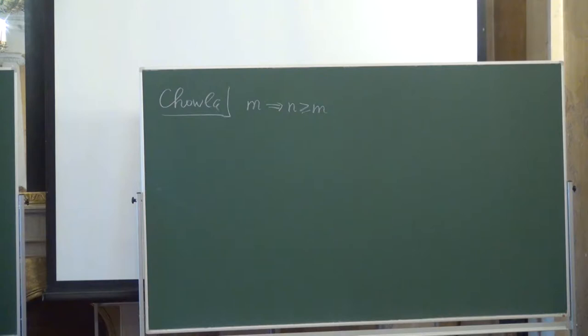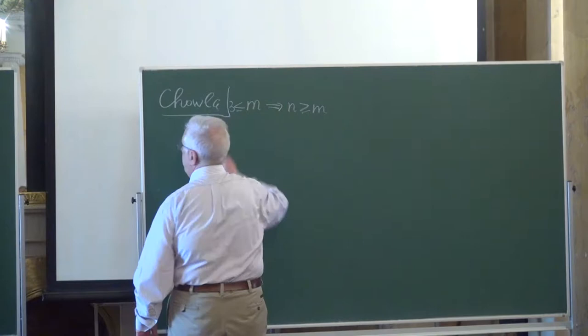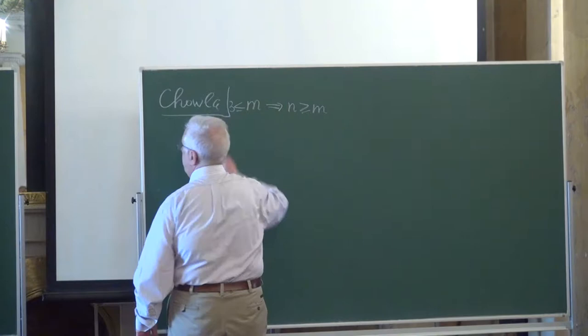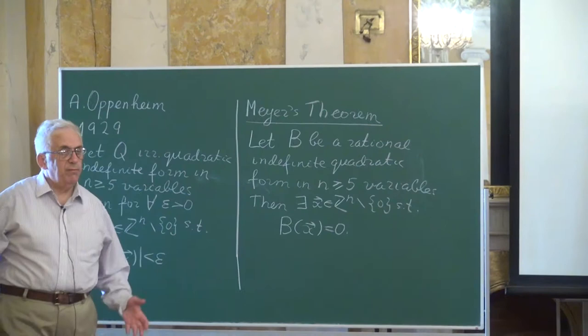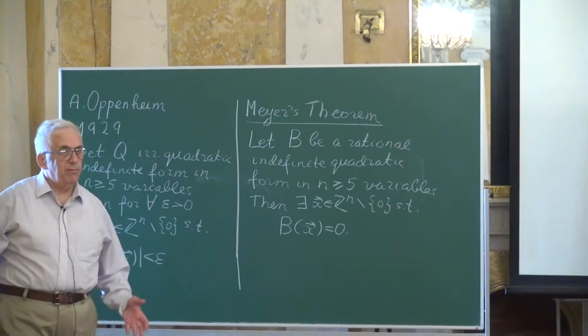Given a form in n variables satisfying all the conditions, it is possible to find a rational subspace of dimension m such that the restriction of the form to this subspace also satisfies all the conditions — it will be irrational and indefinite. This is quite an easy exercise in quadratic forms. Therefore the most difficult case is the smallest value: n ≥ 5 for the original assumption, and n ≥ 3 for the stronger statement.